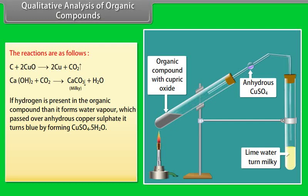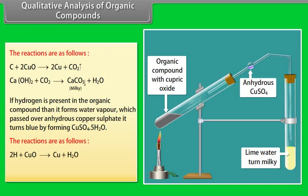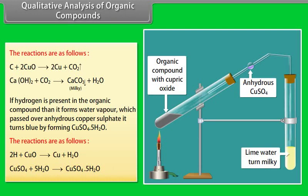If hydrogen is present in the organic compound, it forms water vapour which, when passed over anhydrous copper sulphate, turns it blue by forming CuSO₄·5H₂O. The reaction: hydrogen in organic compound + copper(II) oxide → copper + water; the produced water reacts with anhydrous copper sulphate, turning it blue by forming CuSO₄·5H₂O.